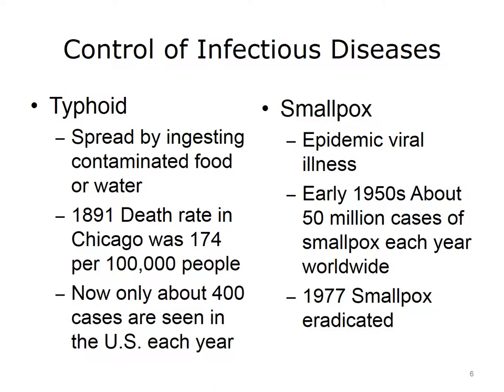As late as the 18th century, smallpox was responsible for the death of every 10th child born in France. In the early 1950s, there were about 50 million cases of smallpox each year worldwide. By 1967, this figure fell to 10 to 15 million because of mass vaccination drives. By 1977, smallpox was eradicated, predominantly due to an aggressive public health program and the use of an effective vaccine.